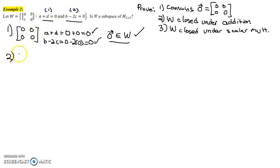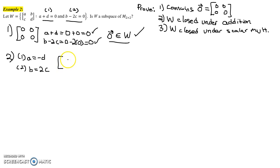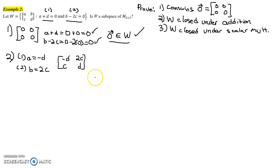Moving on, it may help to rewrite the first condition as A equals negative D, and the second condition as B equals 2C. So any matrix [A, B; C, D] in W would have to have this form: the top-left entry is negative D, and B equals 2 times C. So any vector in W has to have that form.